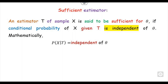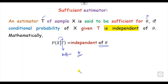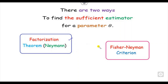So what is the sufficient estimator? As we discussed in the last video, any estimator T is said to be a sufficient estimator for the parameter theta if the conditional probability of X given T is independent of the parameter theta. However, applying this definition directly may take many computational steps because you have to find the conditional probability. So to simplify, there are two ways to find the sufficient estimator.